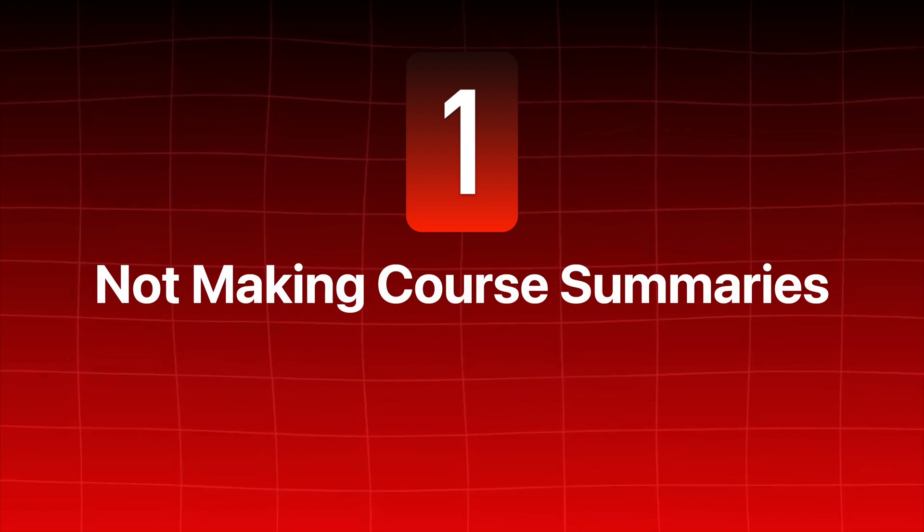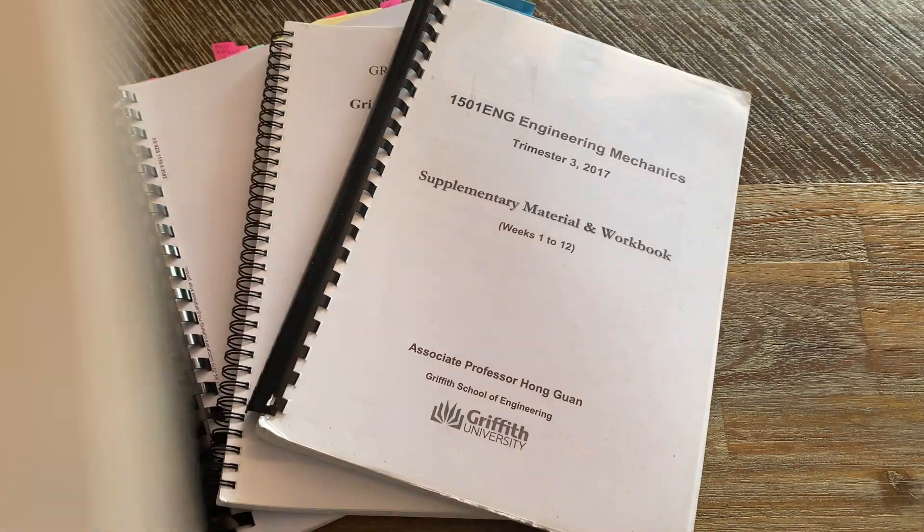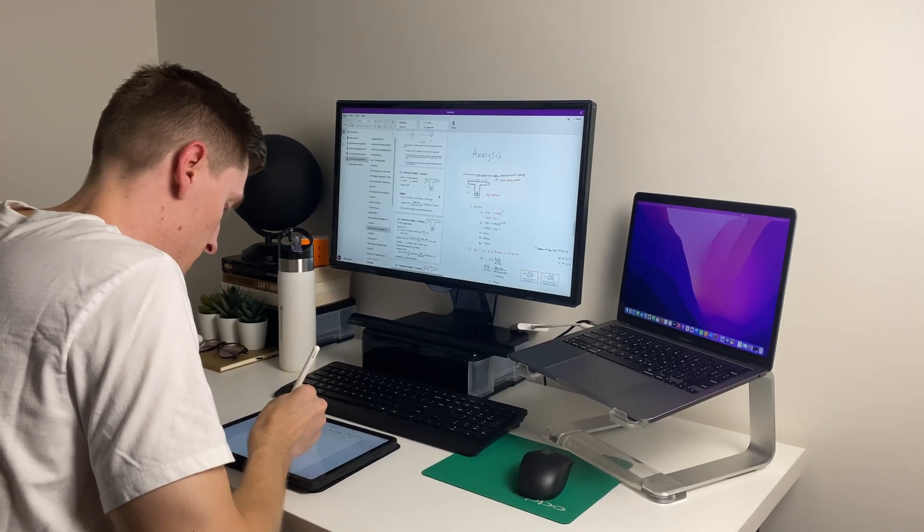The first big mistake I made is not making course summaries. While I do have notes and plenty of other study material left over from each of my courses, none of it is concise and super easy to refer back to. This is a real shame because even though I took all these courses and had a deep understanding at the time, if I wanted to relearn any of this stuff I would literally just have to reread all of my leftover material.